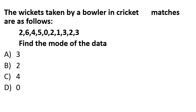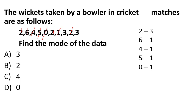Practice question: The wickets taken by a bowler in a cricket match are 2, 6, 4, 5, 0, 2, 1, 3, 2, 3. Find the mode of the data. Counting repetitions: 2 appears 3 times, 3 appears 2 times. So the mode is 2.